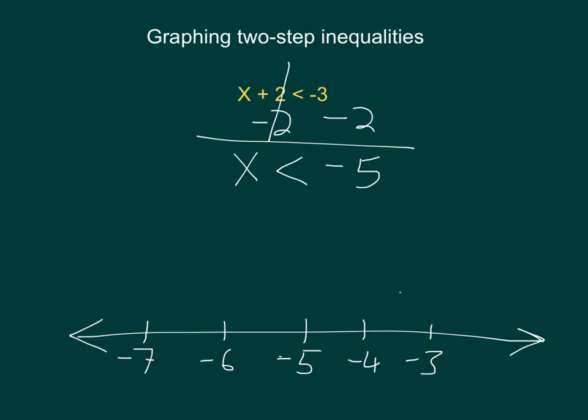Now, if we remember, because we have a less than and not a less than or equal to, we're going to have an open circle at negative 5.